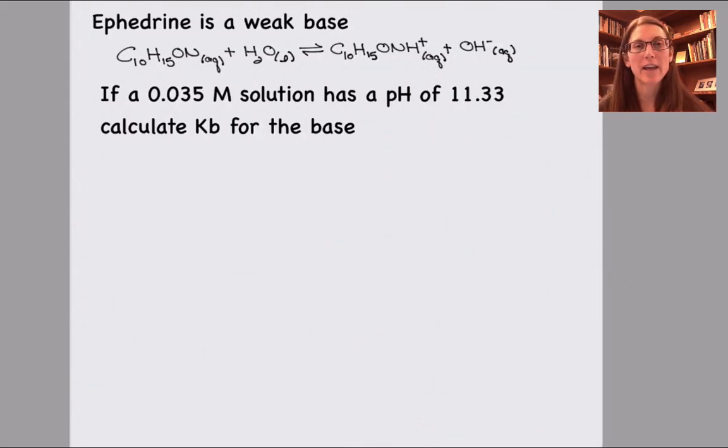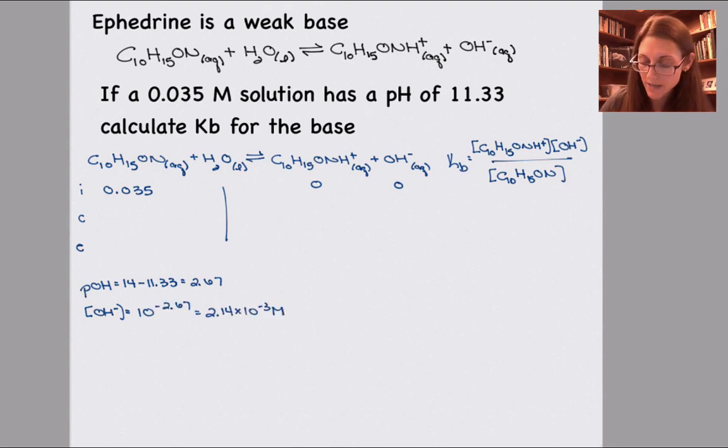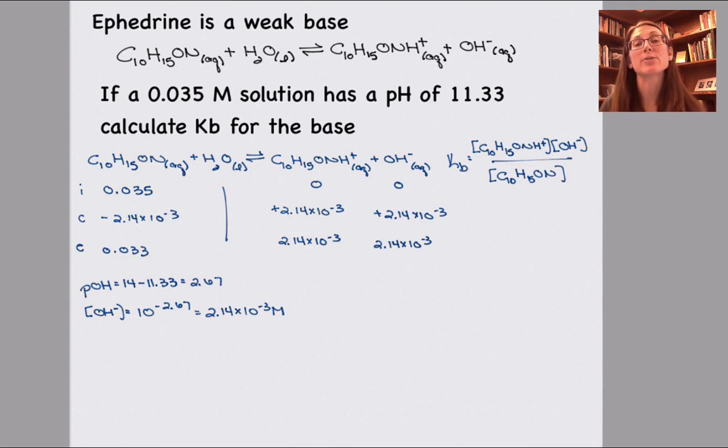In this example I have ephedrine, and I already have a balanced chemical equation for its reaction in water, where it's acting as a base. I know that I have a pH of 11.33 in a 0.035 molar solution of the ephedrine. I'm going to rewrite my balanced chemical equation and my Kb expression, so I can make an ICE table below it. I know that before the equilibrium was established, I had an initial concentration of 0.035 molar for the ephedrine. To calculate the hydroxide ion concentration, I'm going to take that pH and turn it into pOH. That will allow me to determine the hydroxide ion concentration. From there, I can put that information into our ICE table. Once I have a completed ICE table, I can plug those numbers into the value for Kb.